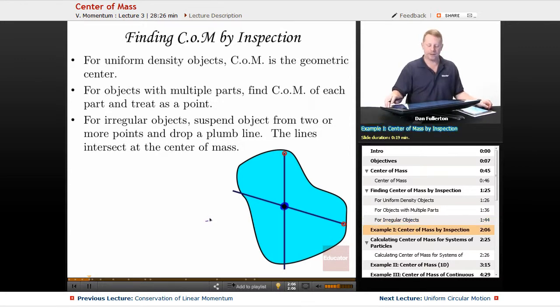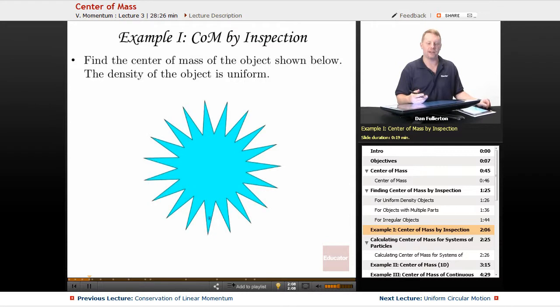Now we can also figure this out by inspection, especially if we have a highly symmetric object. If we have something like this with uniform density, even though it's got a complex shape, it's pretty easy to see that the center of mass is going to be right in the geometric center of our object.